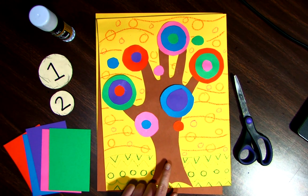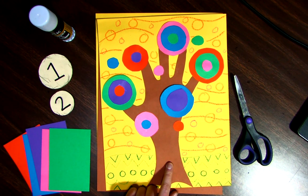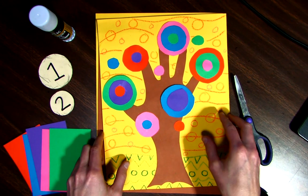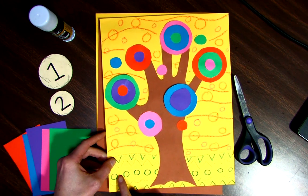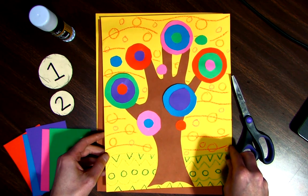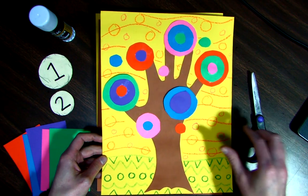The first thing we're going to do is make our tree trunk, which we're going to be using our hand to trace to get that shape. Then we're going to be using different colors to cut out our circles to glue to our tree. And if you have time, you can even decorate your background with different patterns and shapes, just like we talked about when we did our snake project.